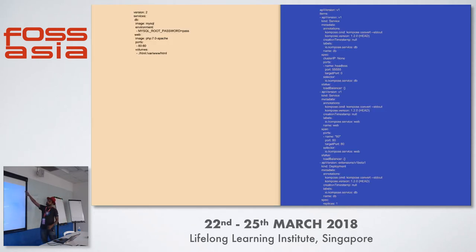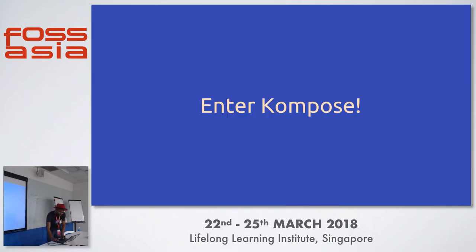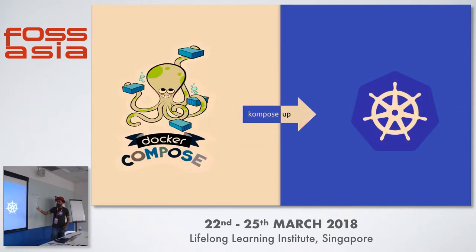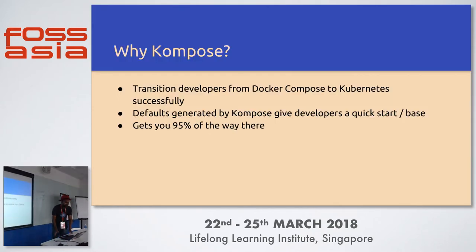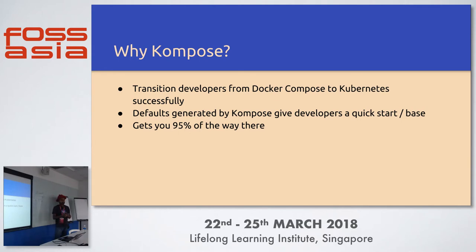Your Docker Compose file was just 8 to 10 lines, and here's the Kubernetes equivalent — it keeps going down as well. So here's the solution: Compose. What Compose does is give you the power to deploy your Docker Compose file onto Kubernetes. The output generated by Compose may be the quick start for you — it gives you the base manifest to deploy. It won't be 100% perfect, but you'll be 95% of the way there on Kubernetes.